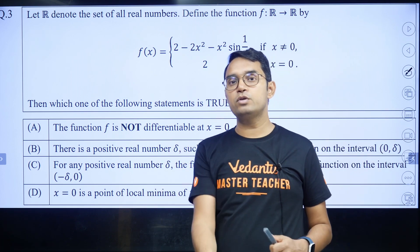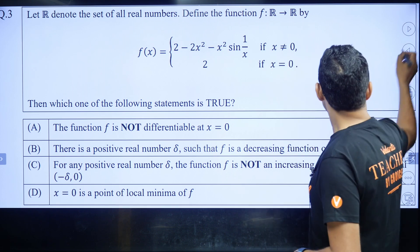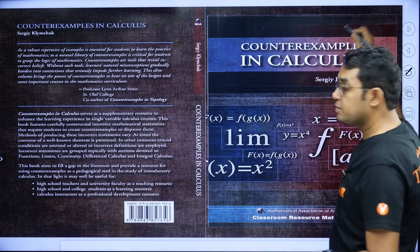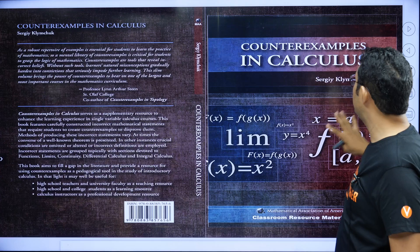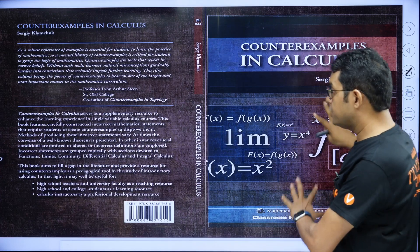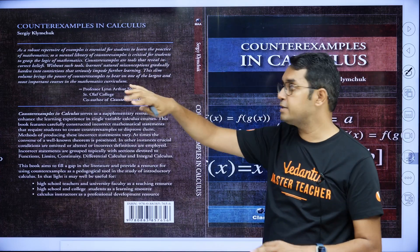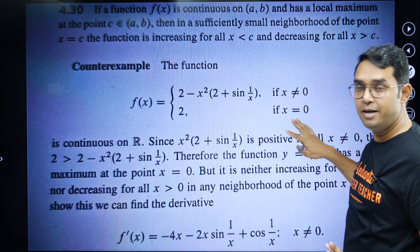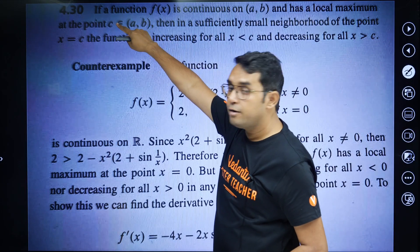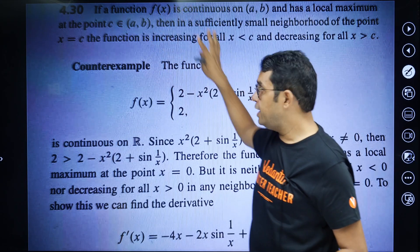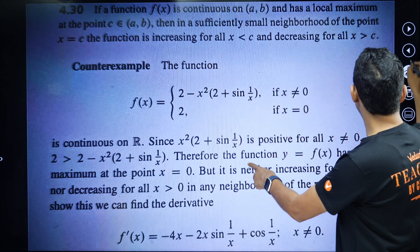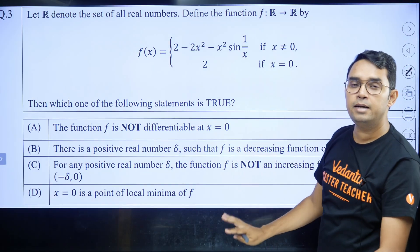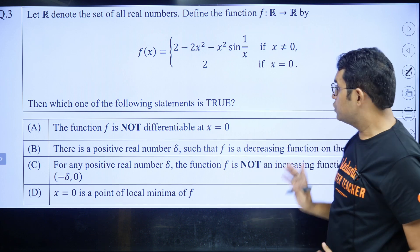I will like to tell you two things about this question. One is that this question is actually copied from some source that is counterexample in calculus. Maybe that was the first source, maybe from somewhere else they copied. But originally, I think we can say this question is given here where in article 4.30 some theory is given and then this example is given. You can match, it is exactly same thing. They have only added certain options here.